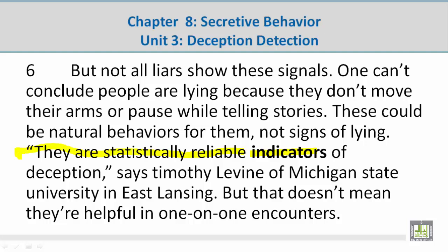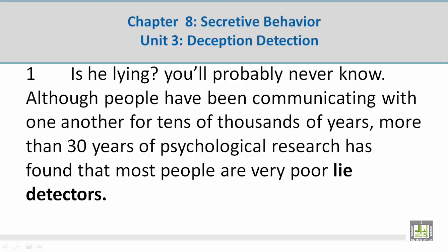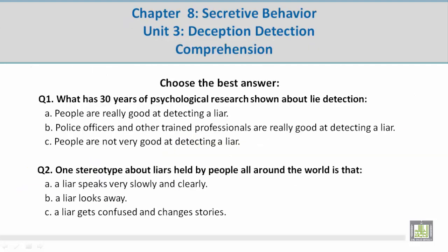Choose the best answer. Question number 1: What has 30 years of psychological research shown about lie detection? C — people are not very good at detecting a liar. The paragraph reads: more than 30 years of psychological research has found that most people are very poor lie detectors.